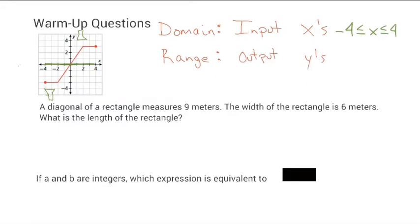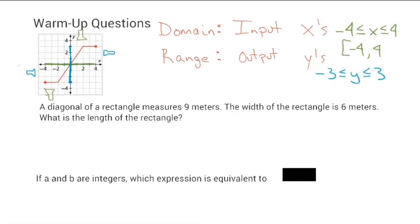This question wasn't asked, but for the range, pretend you have flashlights shining from the left or right of your graph and figure out where the shade lands on the y-axis. For this graph, the range goes from negative three up to positive three, so the range is negative three ≤ y ≤ three. You can write it in inequality notation or interval notation, where square brackets represent 'equal to.' So the interval notation would be [-3, 3].